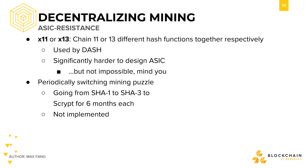Another idea to achieve ASIC-resistance that people have tried was to chain together a bunch of hash functions. The idea was that it is much harder to create an ASIC that can deal with so many hash functions, not just one. That was the idea behind X11 and X13, which chained together 11 and 13 hash functions together respectively.